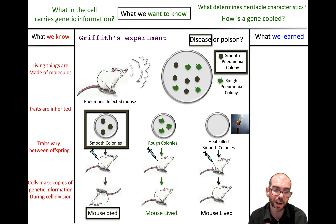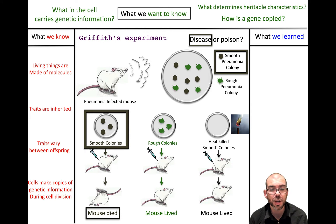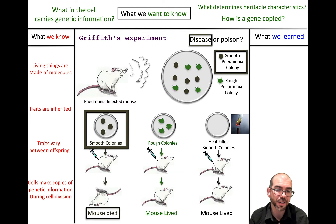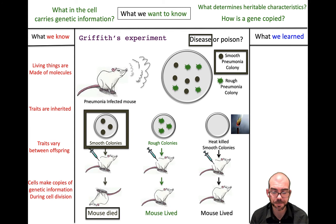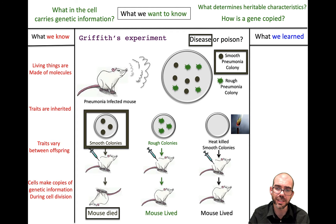The mouse that received the smooth colonies died, whereas the ones that received the rough colonies and the heat-killed colonies survived. So it is the disease — the pneumonia — causing those mice to die, but only the smooth colonies, not the rough ones. Griffith didn't stop there, thankfully.